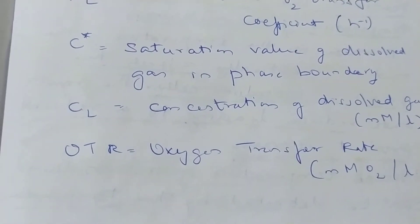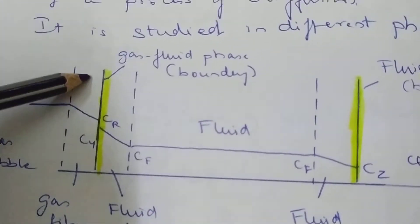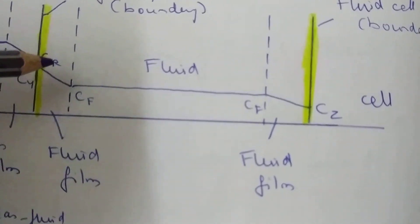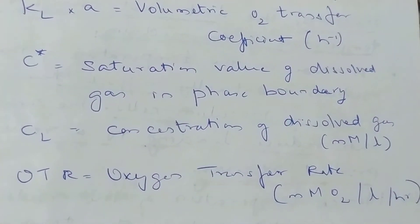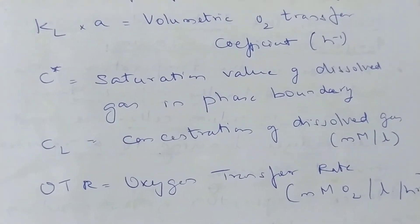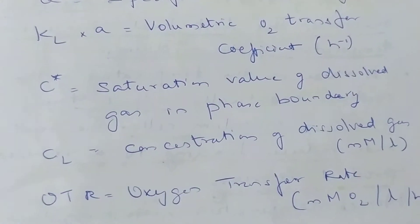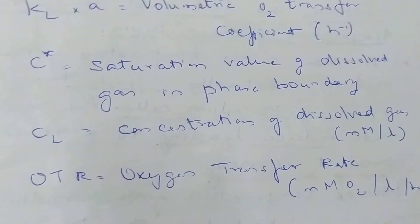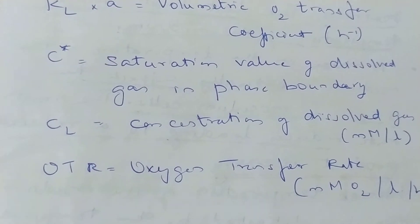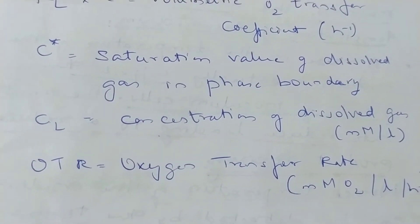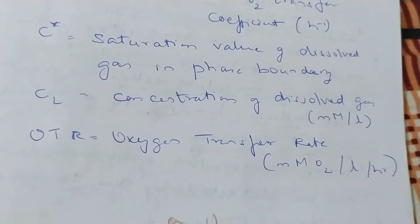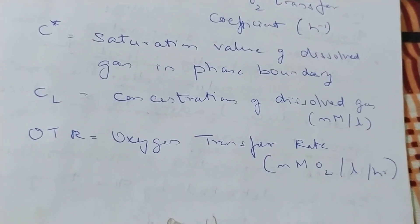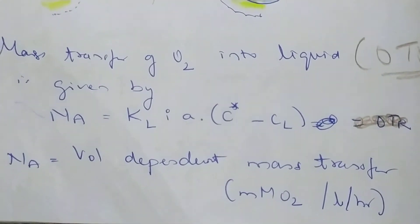CL is the concentration of dissolved gas — the dissolved oxygen concentration in the medium. Imagine oxygen is on this surface and has to come into the fluid. C* is the saturation value of dissolved gas at the phase boundary. For example, if 1000 units of oxygen are at the boundary but only 100 went into the medium, then C* = 1000 and CL = 100. Since oxygen is sparingly soluble, this difference matters. This is all accounted as the oxygen transfer rate in millimolar of oxygen per liter per hour.